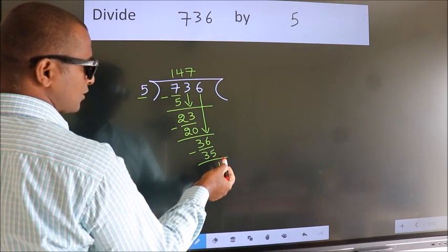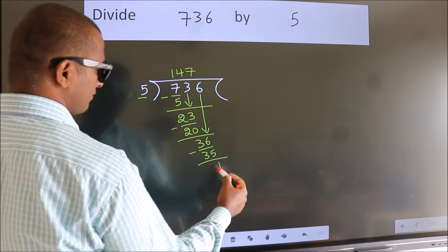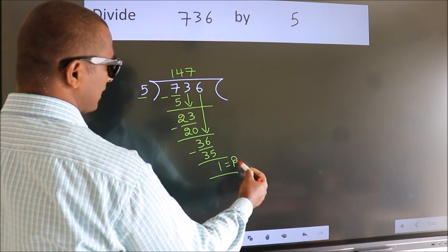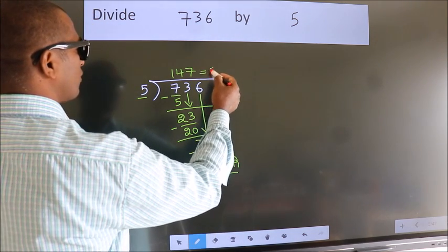No more numbers to bring it down. So we stop here. This is our remainder. This is our quotient.